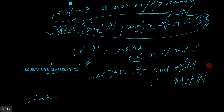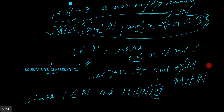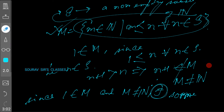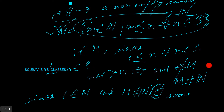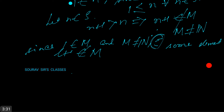Since 1 belongs to M and M is not equal to N, there exists some element l plus 1 which does not belong to M. Now l belongs to M, which implies l is less than or equal to n for all n belonging to S.